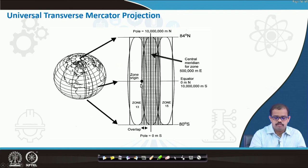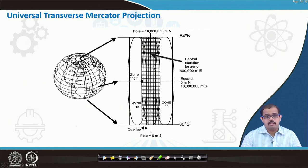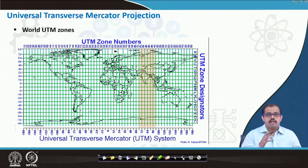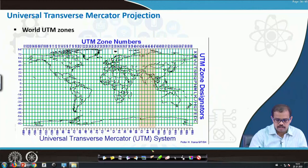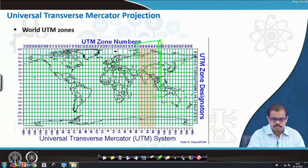This is representing the entire UTM system. You have the zone origin here which is the equator, and you have a central meridian for that particular zone represented here. This particular map is generated through a cylindrical opening. Looking at the entire UTM zones, you can see the zone numbers, and India lies between somewhere between the 42nd zone and the 47th zone.